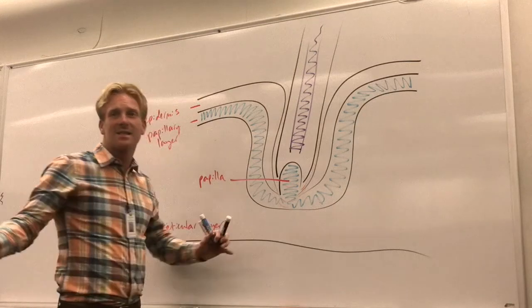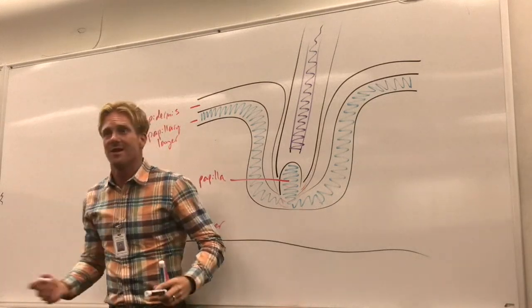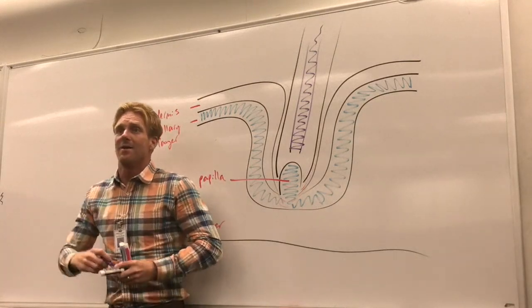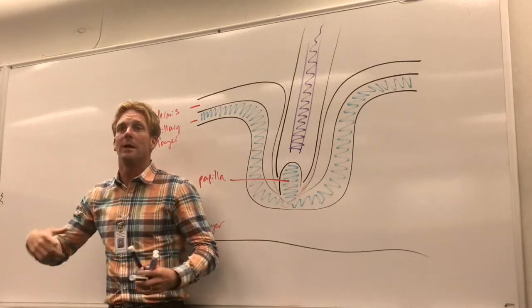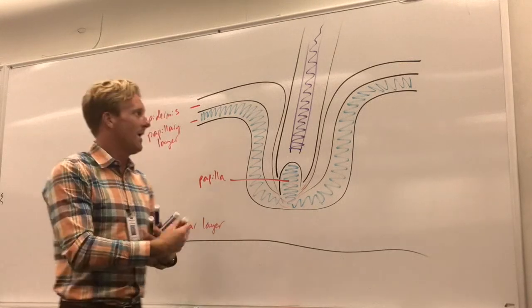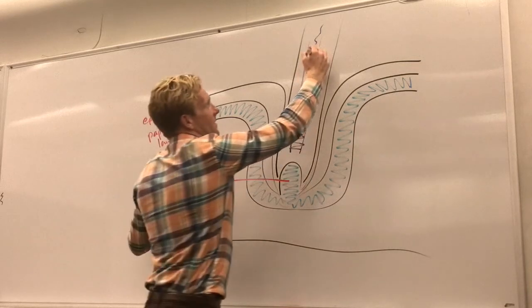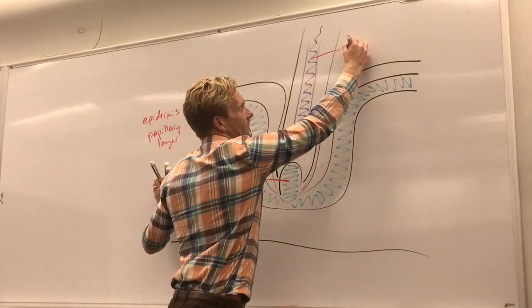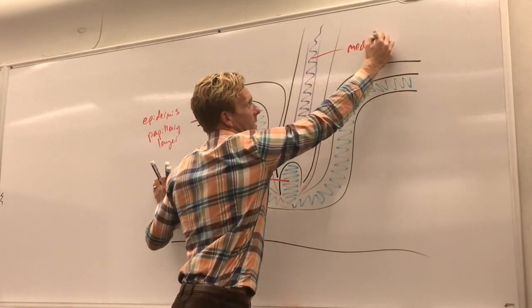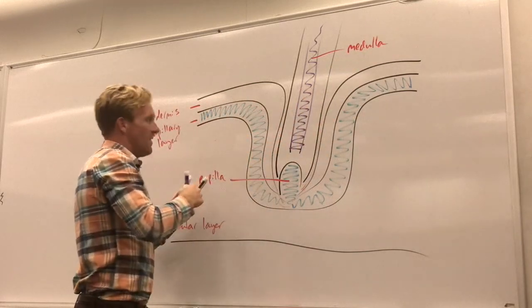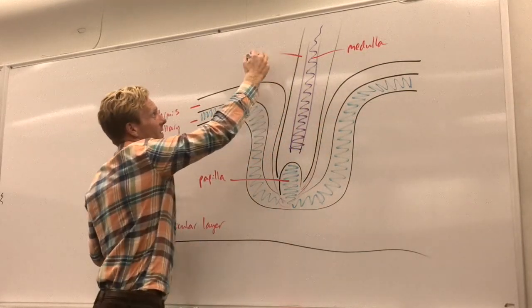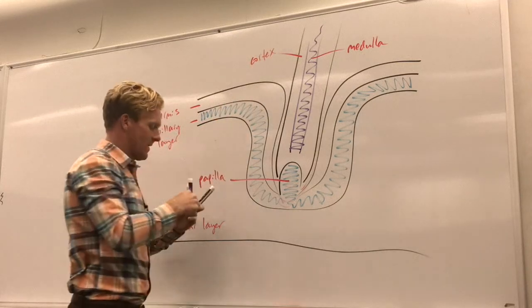So the innermost region, I'll color it in purple, this is called the hair medulla. And just like many structures in anatomy in our body, the innermost region is called the medulla—our renal medulla, adrenal medulla. Here we have the medulla of the hair strand, M-E-D-U-L-L-A.